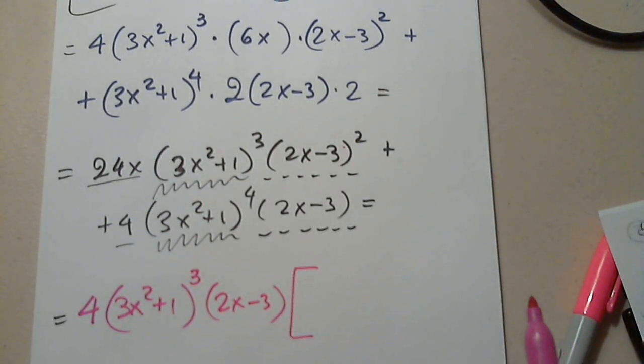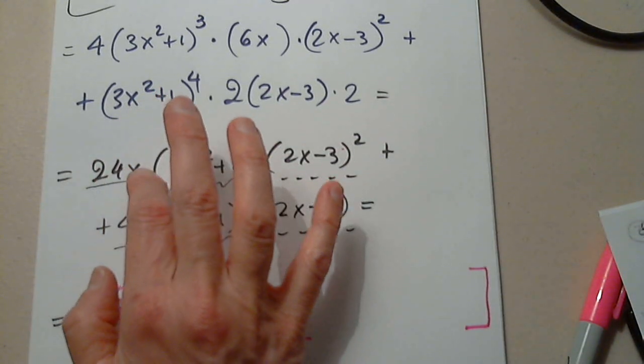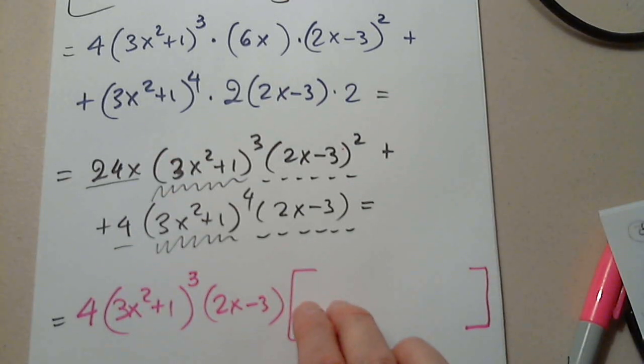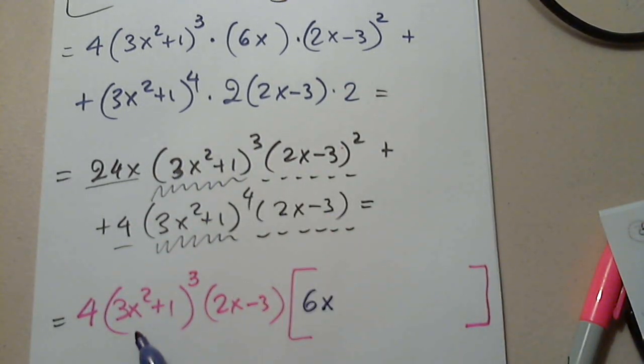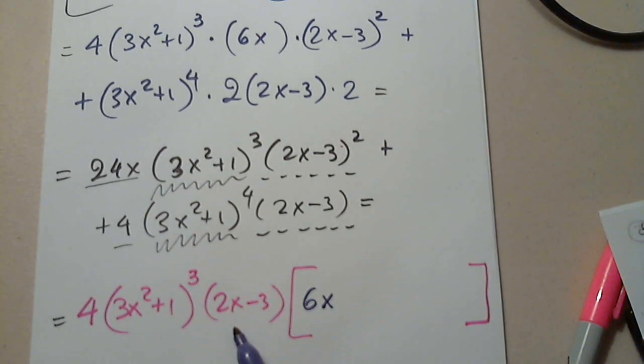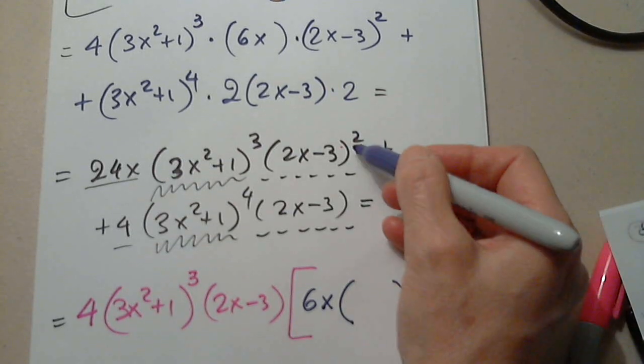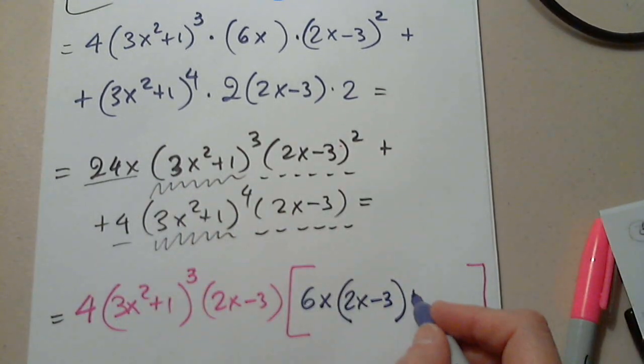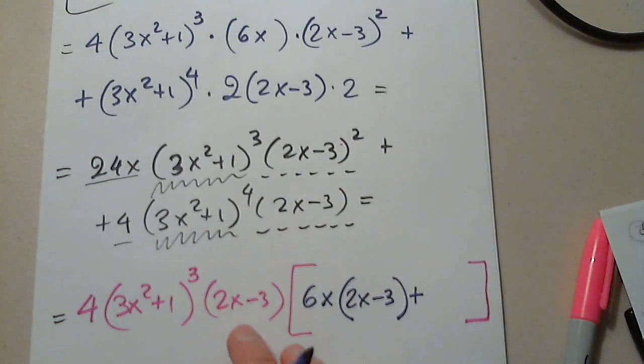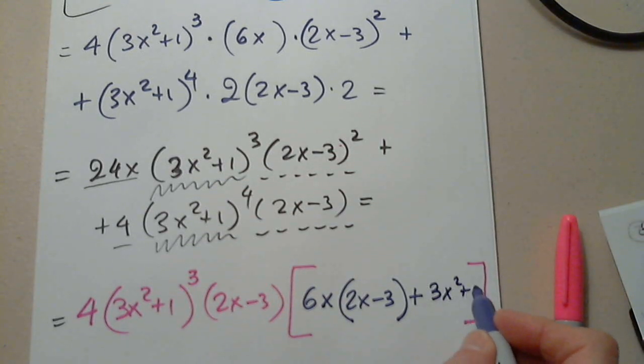Now I look at outside. I look at inside. And I see a lot of things in common. When we look at the outside. What is common to 24x and 4? What can I pull out? Just 4. Awesome. From these two. What can I pull out? 3x squared plus 1. And the power? I'm seeing 3. The smallest of the two. From these two. What can I pull out? 2x minus 3. To which power? Yes. The smallest of the two. And now careful. Okay. So let's see what we have inside. 24x. I pulled out the 4. So what is left inside? 6x. Awesome. From these three. I pulled everything out. From these two. I pulled one out. So how many are left inside?